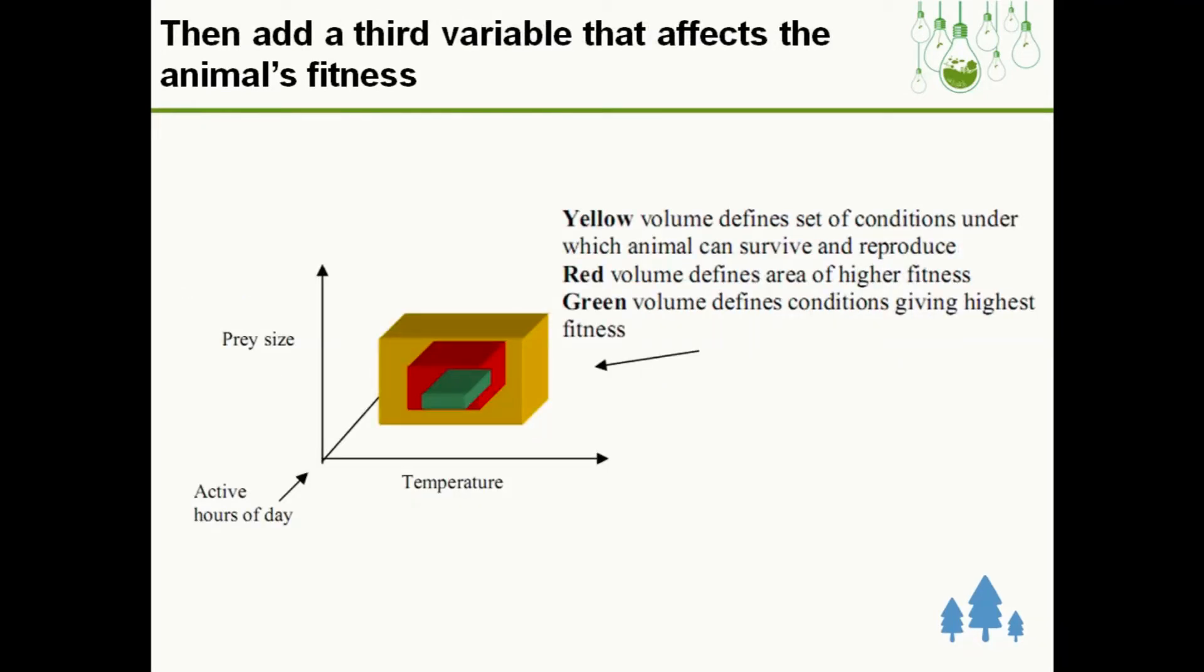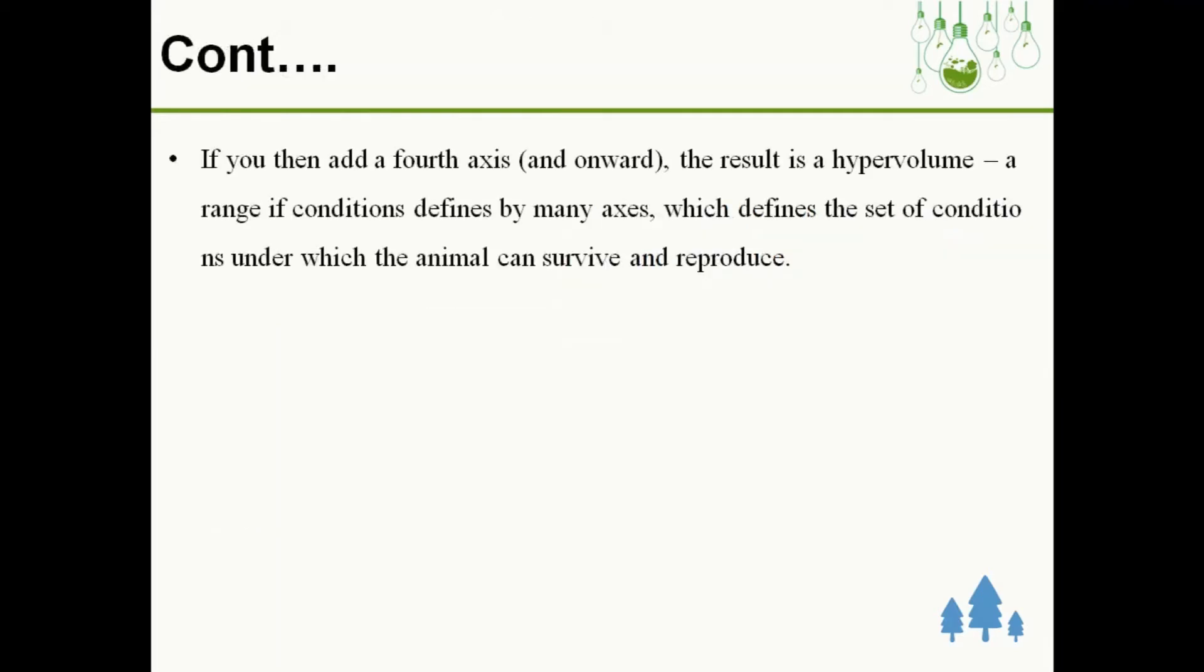If we add another variable, we can see again there are three distinct zones. Yellow volume defines set of conditions under which animal can survive and reproduce, red volume defines area of higher fitness, and green zone is the area of highest fitness. If we add further variables, it will result in a hypervolume, which is a range of conditions defined by many axes that define the set of conditions under which animals can survive and reproduce effectively.